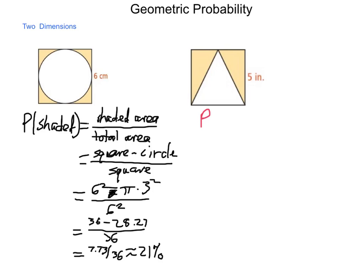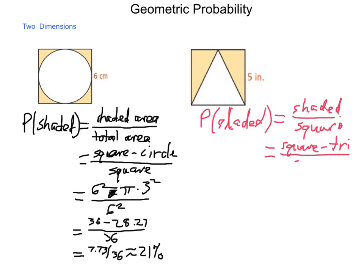Probability of shaded area again is, in this case, going to be shaded area divided by the square again. Our shaded area is square minus triangle over the total area of the square.